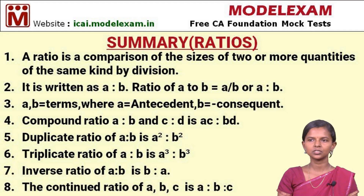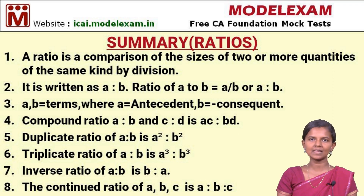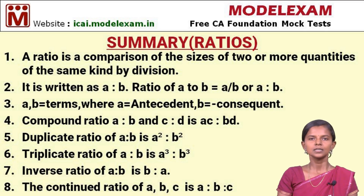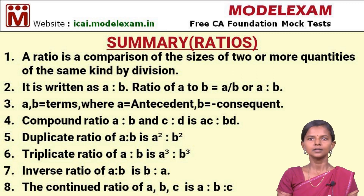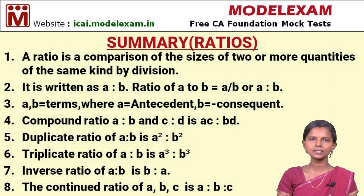This is the summary on the topic ratios. The first point is a ratio is a comparison of two or more quantities of the same kind by division. We write this as A is to B, or in different forms: ratio of A to B can also be written as A by B, or in the ratio form A is to B. Here A and B are the terms of the ratio, where A is the antecedent part and B is the consequent part.